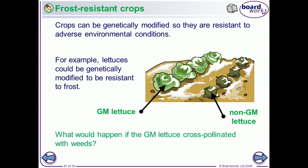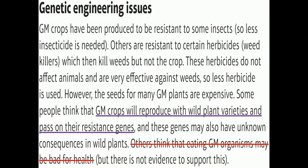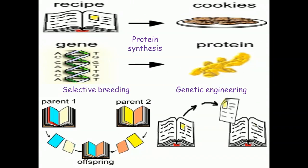The disadvantage of genetic modification is that the organism can cross-pollinate with weeds or wild-type plants, meaning GM crops can reproduce with wild plant varieties and pass on their resistant genes. To summarize: in protein synthesis you use a gene as the genetic code to make a protein; in selective breeding you hope the genes are inherited from parents in the offspring; in genetic engineering you transfer the gene from one organism and introduce it to another, so the other organism will have the desired characteristic because it has the transferred gene and can do protein synthesis to produce the protein.